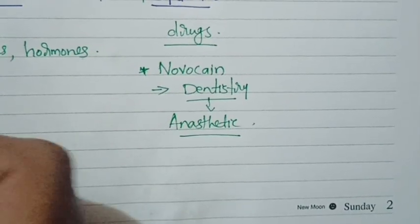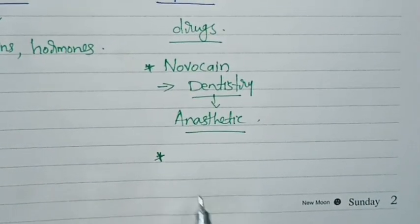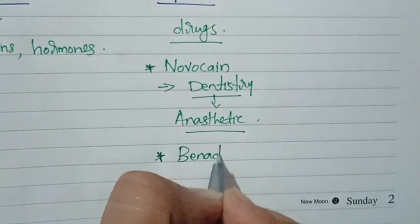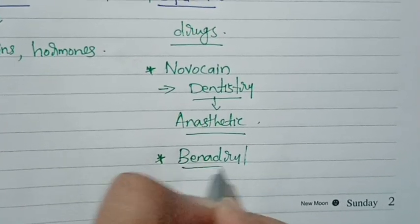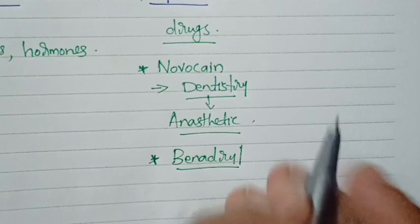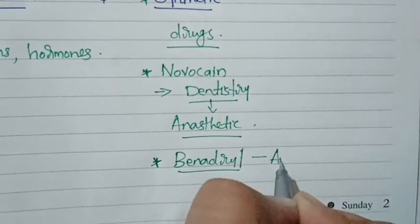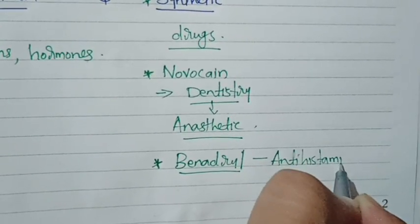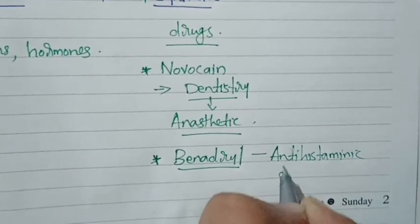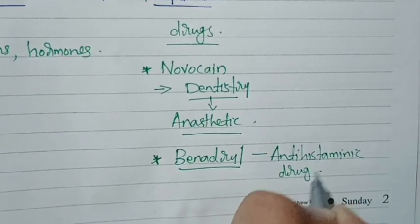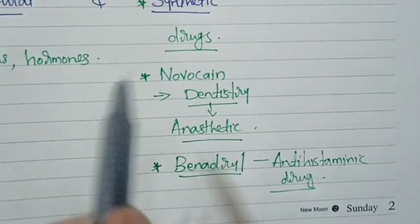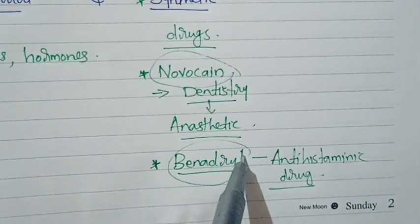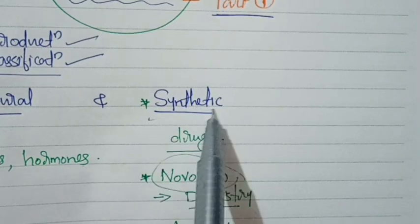These two drugs will be specified in the textbook. The second drug is Benadryl — remember that name. Benadryl is an anti-histaminic drug, used for asthma patients. Please note the names of these two drugs: first is Novocaine and second is Benadryl. Both contain an amino group.